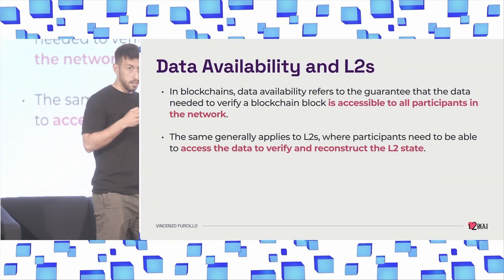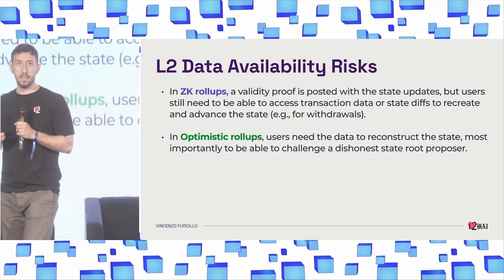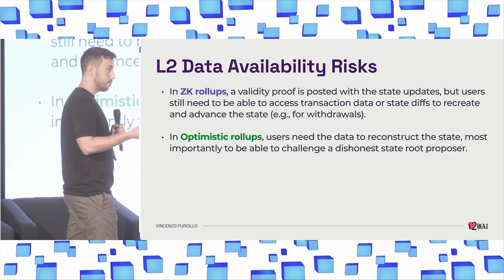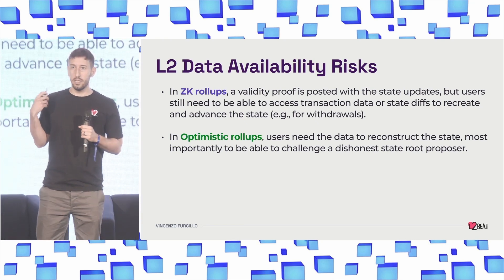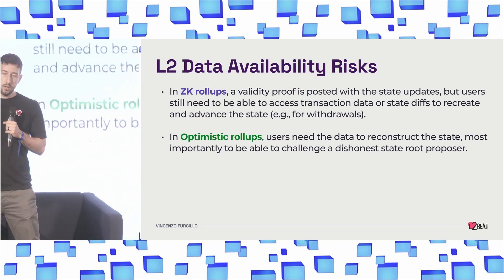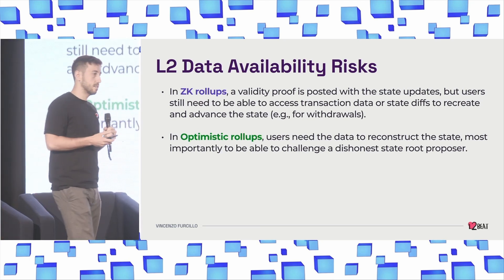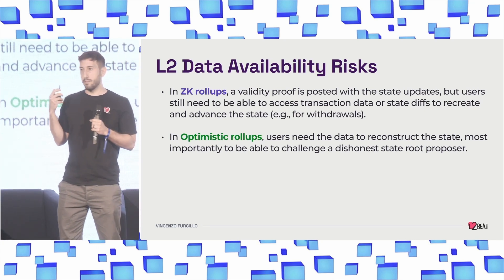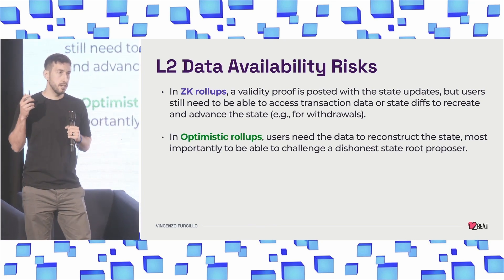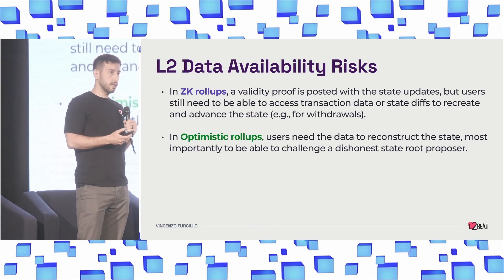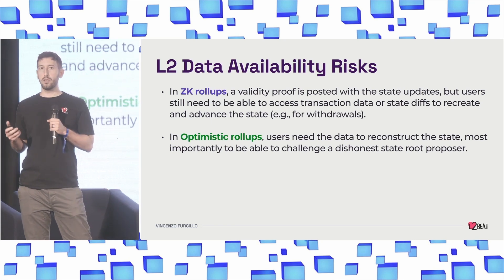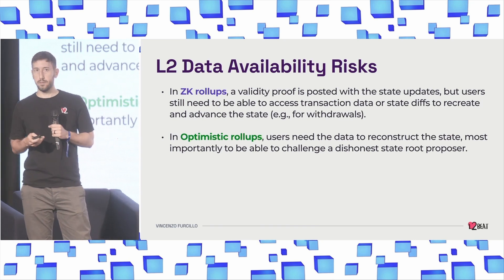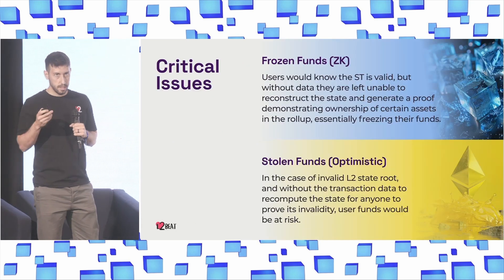There's a slight difference across L2 types. In ZK constructions, you have a validity proof — you know that the state transition is valid — but users still need to be able to access the data to reconstruct the state and maybe advance it for withdrawals. In optimistic rollups, you still need to reconstruct the state with the data, but most importantly, you need to be able to challenge an invalid state root proposal.